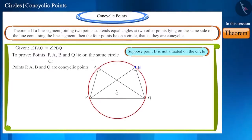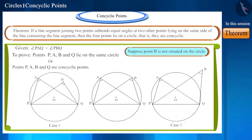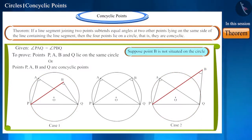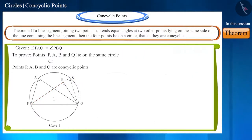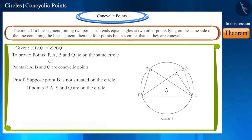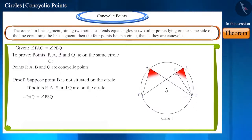Suppose point B is not situated on this circle. Point B can then be either in the interior or the exterior of the circle. In that case, the line segment PB will intersect the circle at some point S or S-dash. If points P, A, S, Q are on the circle, then the angles subtended by them will be equal, because angles in the same sector are equal.